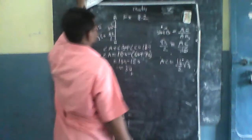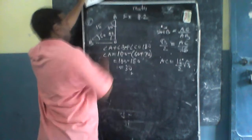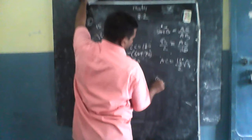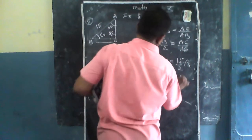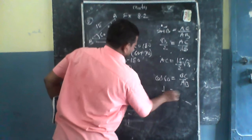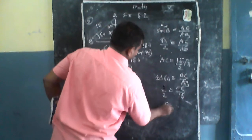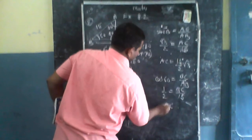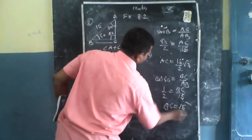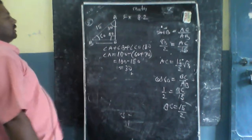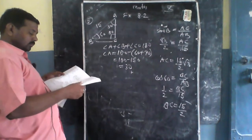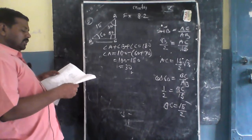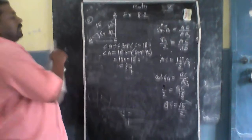AC का मान निकाल लिया। BC भी निकाल लिया। तीनों sides आ गईं और angles भी। Question पूछ रहा है सभी कोण और भुजाएं ज्ञात कीजिए — यह आपका question हो गया।